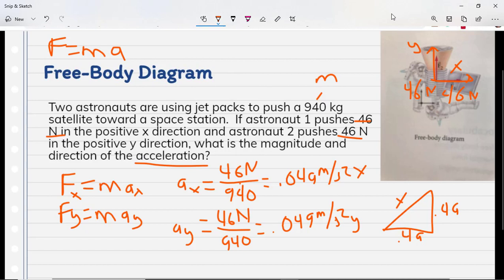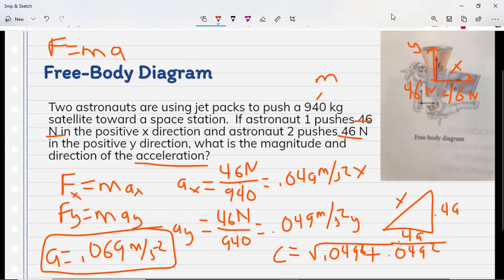Well, again, we can use the Pythagorean theorem to solve for that. a squared plus b squared equals c squared. So c is equal square root 0.049 squared plus 0.049 squared. Plug those numbers into our calculator and solve. We get a net acceleration of 0.069 meters per second squared.